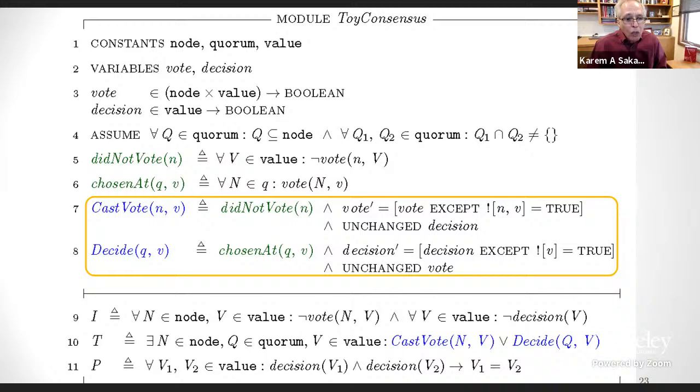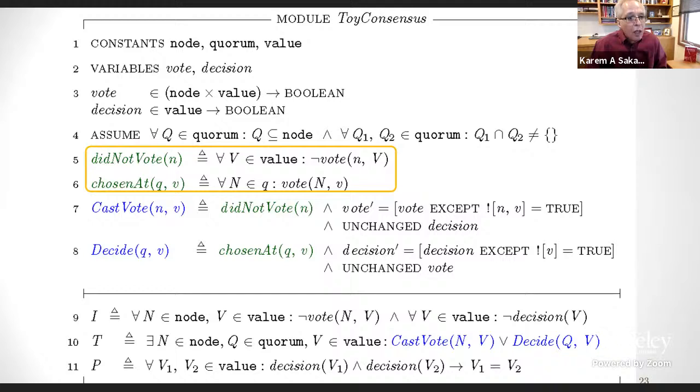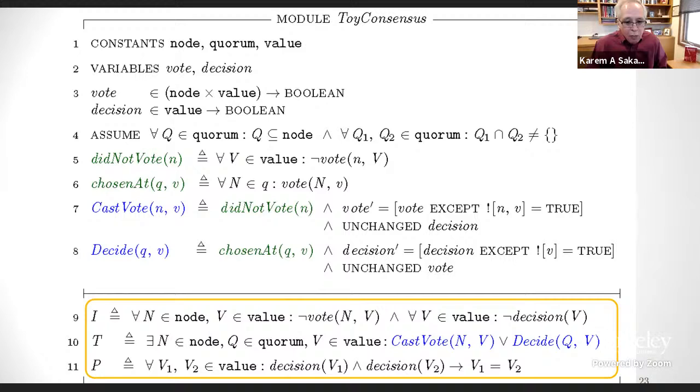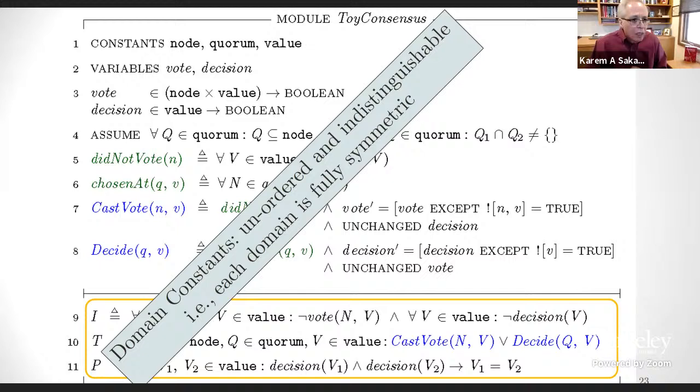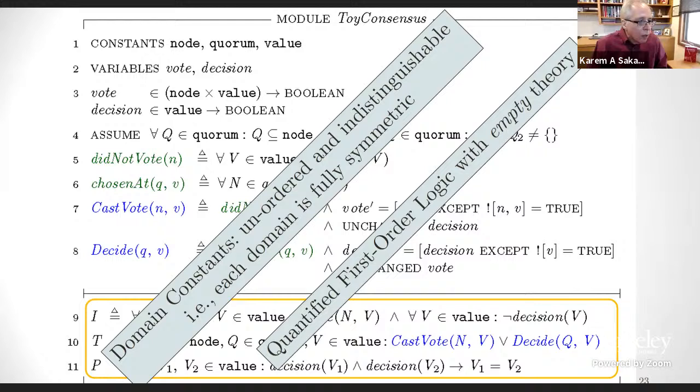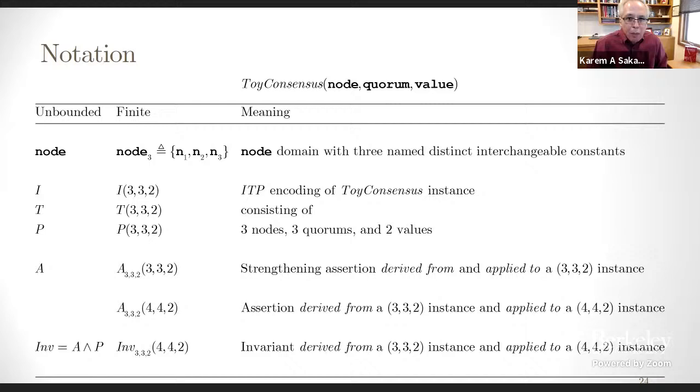I will be describing this in the TLA plus language because I find it a lot more precise. So we have a toy consensus protocol that is based on three unbounded sets of constants: nodes, quorums, and values. The state variables are a binary relation vote, which is true for a given node value pair if the node has voted for that value, and a unary predicate decision, which is true for a given value if that value has been decided. Quorums are defined as subsets of nodes such that each pair of quorums has a non-empty intersection. The protocol has two actions: cast vote to indicate that node n is voting for value v, and decide to indicate that the value v has been decided on by the nodes in the quorum. Finally, I, T, and P are given as quantified formulas stating the conditions in the initial state, the protocol's possible actions, and the required safety property, namely that if a decision is made on two different values, then they must be the same. That's consensus.